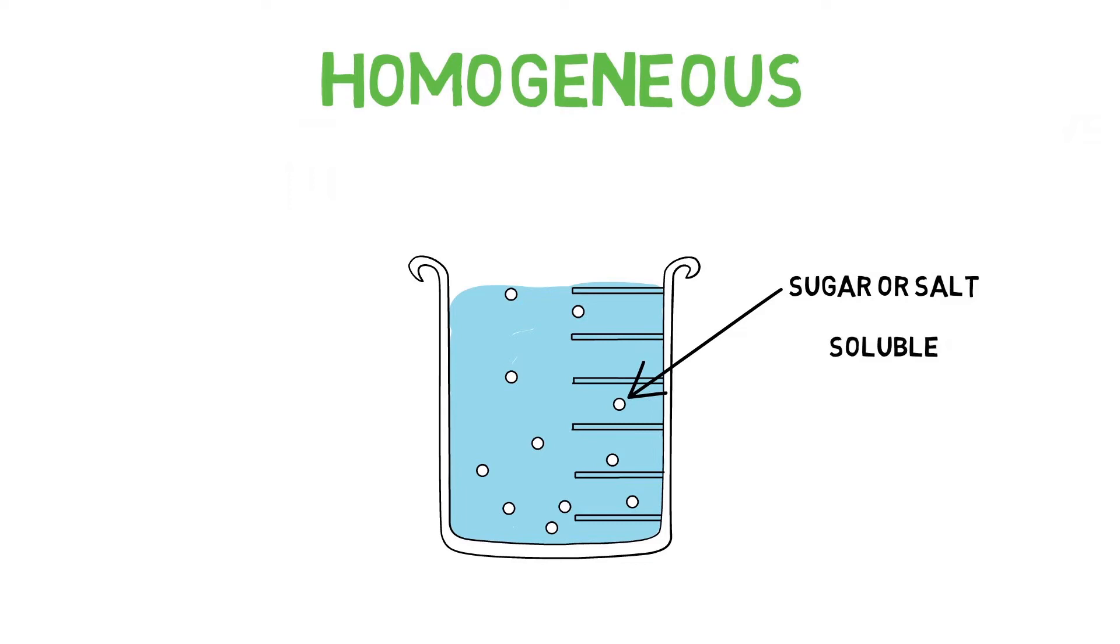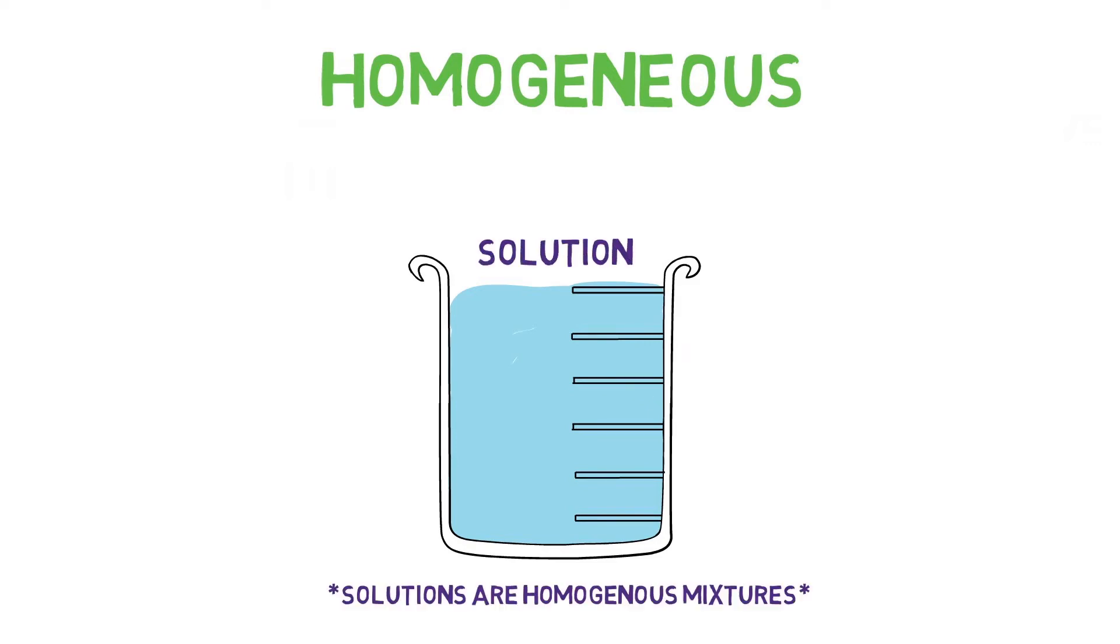When substances dissolve, like in the case of sugar and water, they form a solution. The water is a solvent and sugar is the solute. The solute can be any particle that will dissolve, and the solvent is the likely liquid that is going to dissolve the particle's substance. Anything that dissolves in water would be considered an aqueous solution.